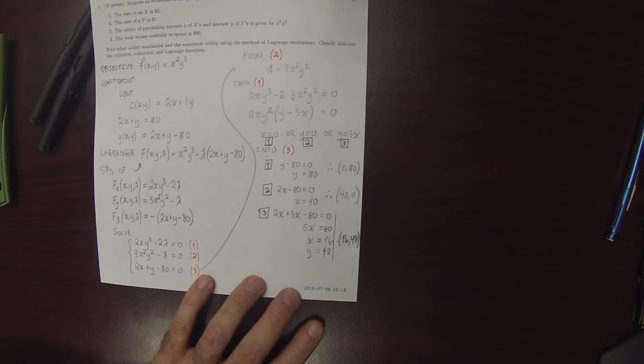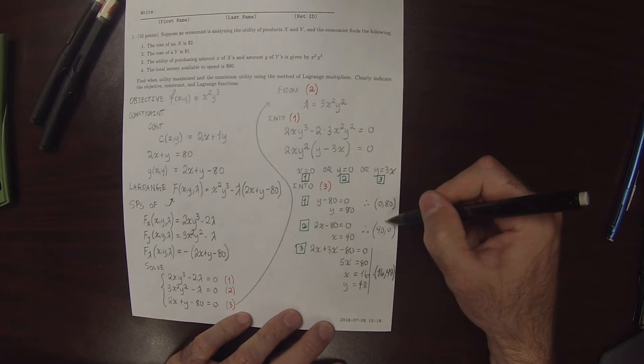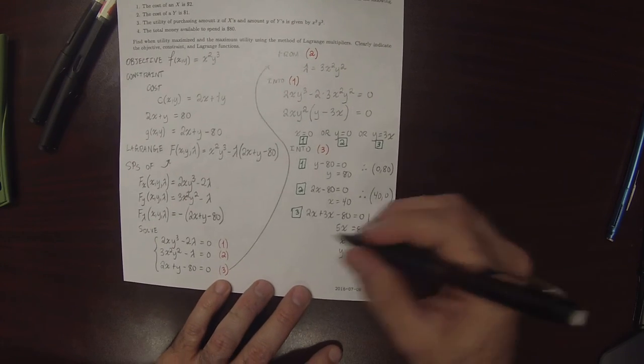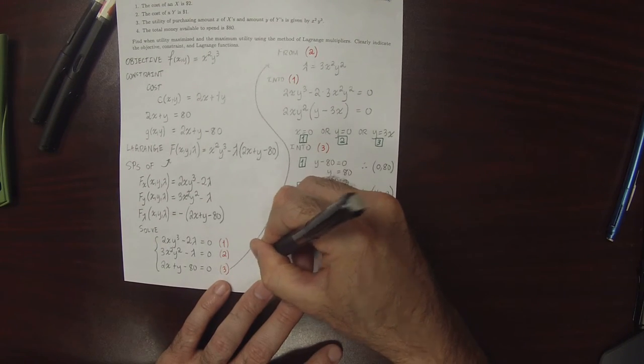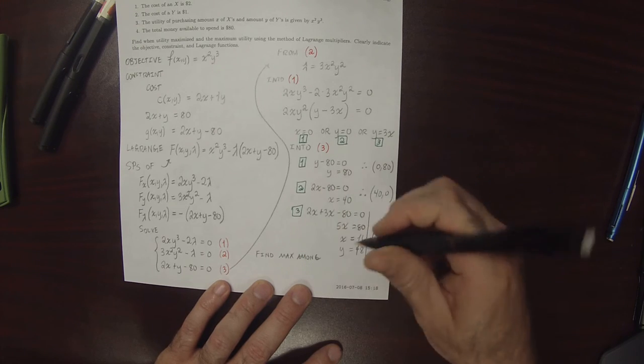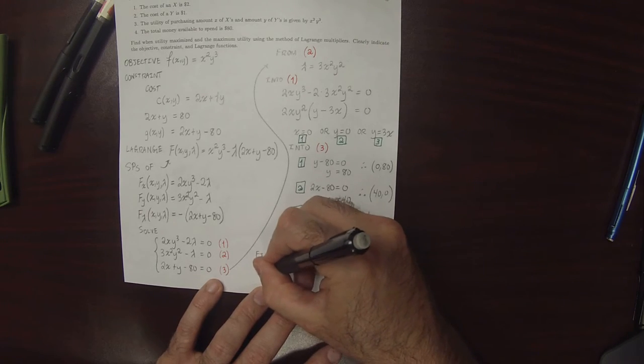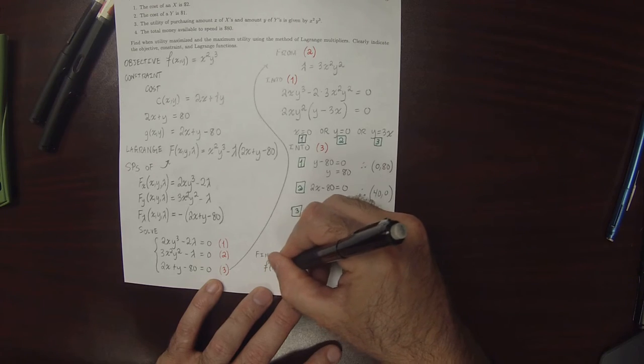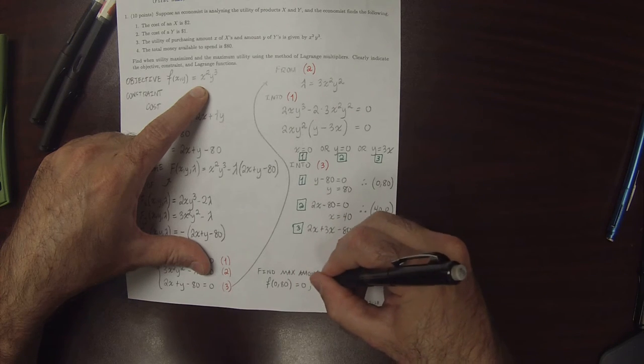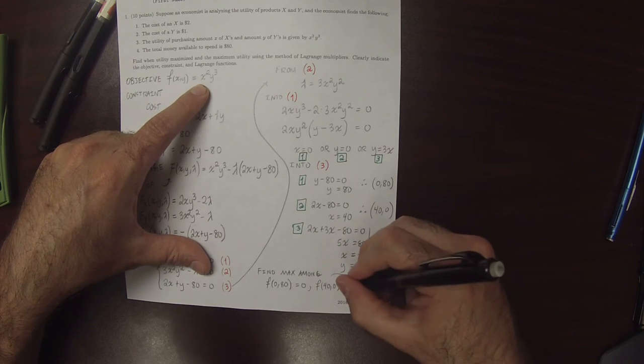Now, the method of Lagrange multiplier says that the maximum must be among these stationary points. So we have 3 possibilities. Let's find the biggest. The objective function at 0, 80, if we plug 0 into this, we get 0. At 40, 0, if we plug 0 for y, we get 0.